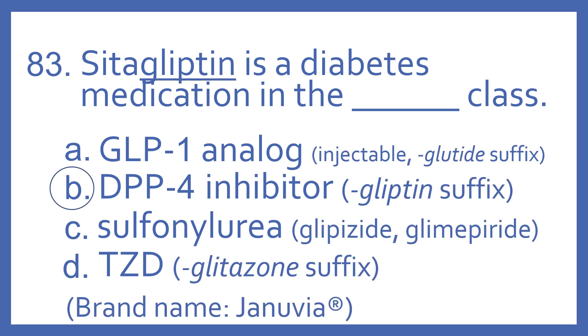And the answer is B. Sitagliptin is a diabetes medication in the DPP-4 inhibitor class. You'll notice it has the 'gliptin' suffix, which is what the DPP-4 inhibitors have.